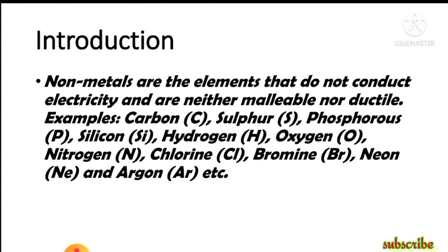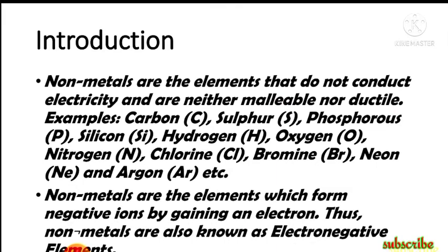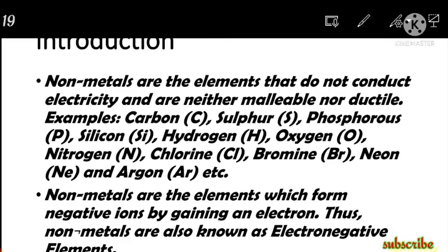In the p-block, there are some metals and some metalloids also. We can define nonmetals on the basis of their properties: they do not conduct electricity and they are neither malleable nor ductile. Nonmetals are elements which form negative ions by gaining an electron — thus nonmetals are also known as electronegative elements. This is just the opposite of metals, which have a tendency to lose electrons, whereas nonmetals have a tendency to gain electrons.